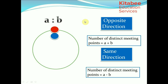Note that A and B must be in their simplest ratio. For example, if speeds are 6 and 10, we reduce to 3:5 before calculating. So always reduce the speed ratio to its simplest form before finding the number of distinct meeting points.